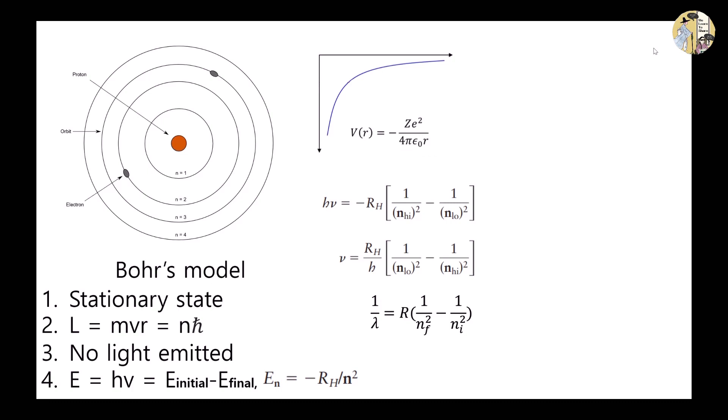However, Bohr's energy expression had problems when extended to other atoms. For example, when the energy of hydrogen was compared to the energy of helium+, the energy of the cation became 4.0016 times hydrogen, which did not match the theoretical value, 4.